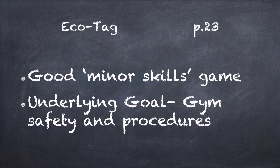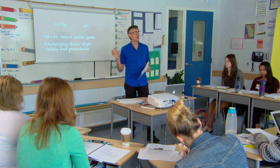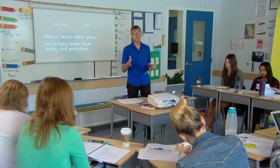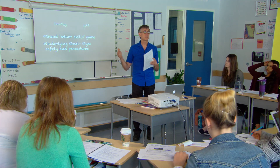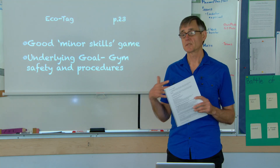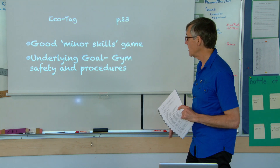On page 23, this is Eco Tag — a minor skills game. It's basically the grass, the rabbits, and the foxes kind of ecological balance game. I recommend you teach it and then try not to use it too much — leave it for the TOC. The kids will like to play it. It's a low organization game.